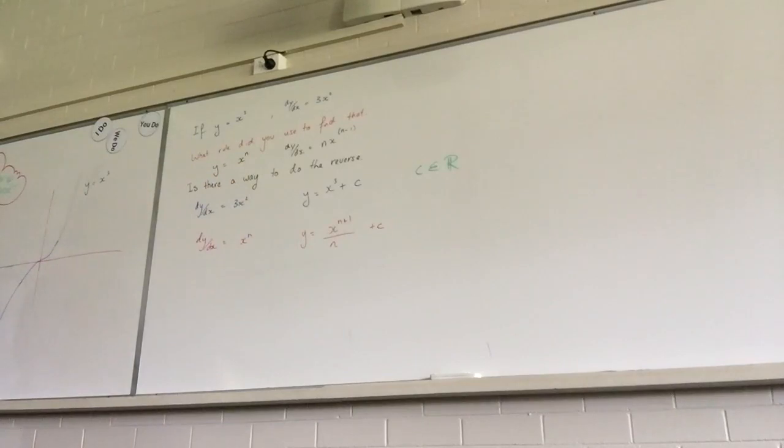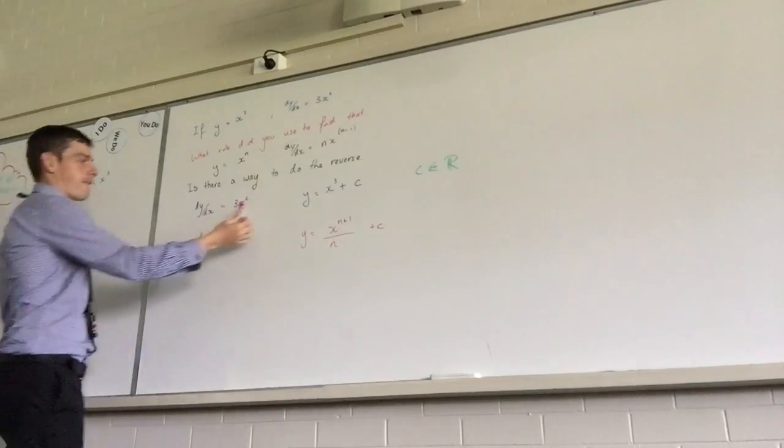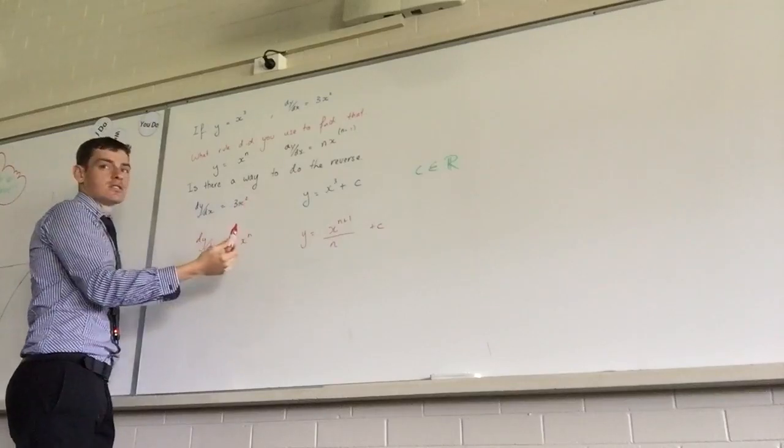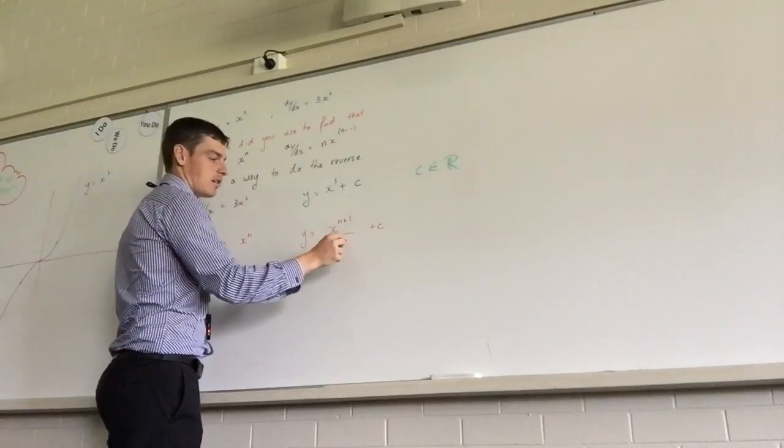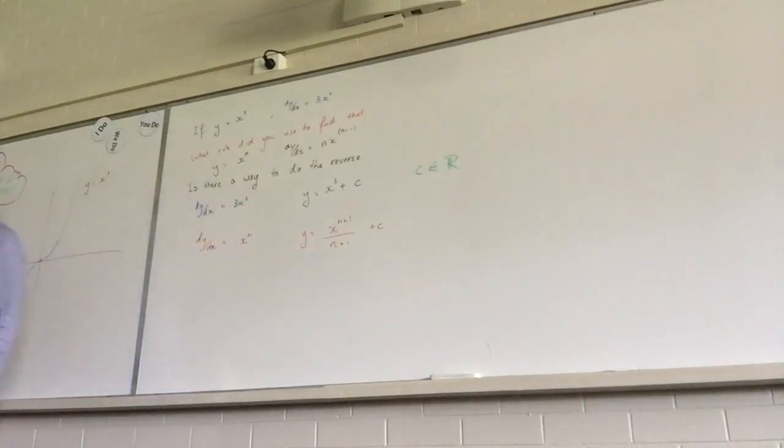Is it? What was n? n is 3. No, it was 2. Because n is the exponent. The original exponent, wasn't it? Yeah. So what's... It would be the coefficient, perhaps. Yeah. Yeah. You're right.